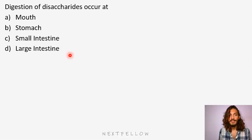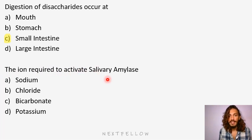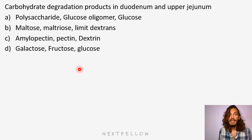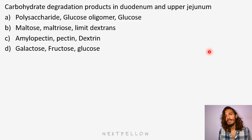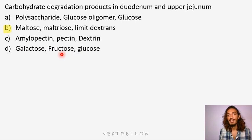Now let's look at questions. Digestion of disaccharides occurs — this is simple. Digestion of disaccharides, that is the final thing, should occur in the small intestine — that is where the enzymes needed for disaccharide cleavage happen. Ion required to activate salivary amylase — that is also simple, that is chloride. Carbohydrate degradation products in duodenum and jejunum — finally when it reaches duodenum and jejunum, we know ptyalin and pancreatic amylase are already active, and finally maltose and limit dextrins are what will be remaining. So this is the answer.